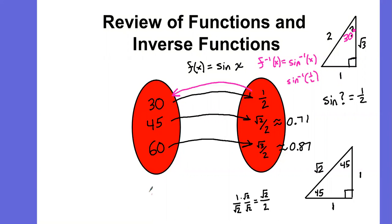In my original function, I had angle values over here. This was my angle measure. Whenever I plug that into the function, I got an output that was a ratio of sides.